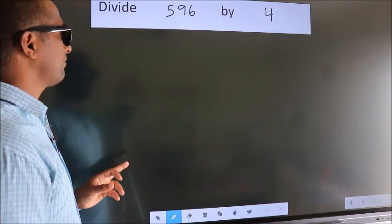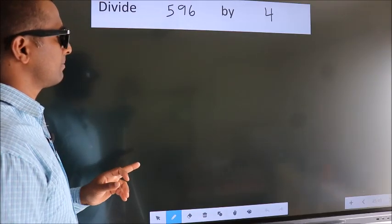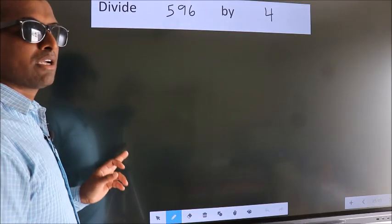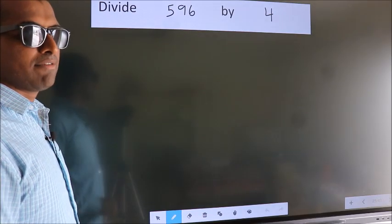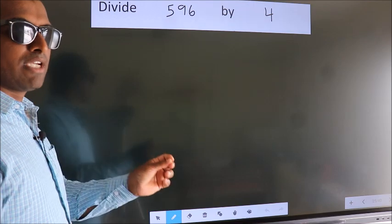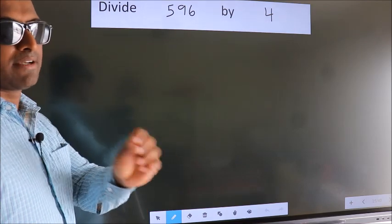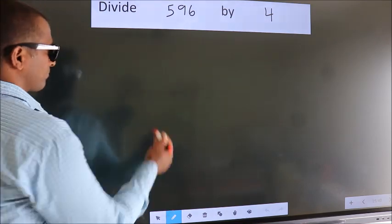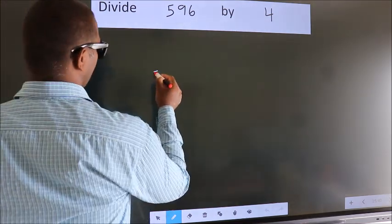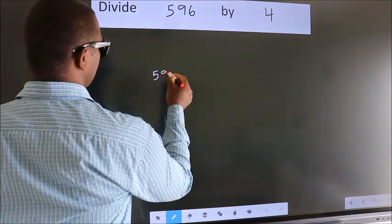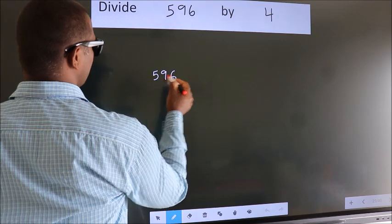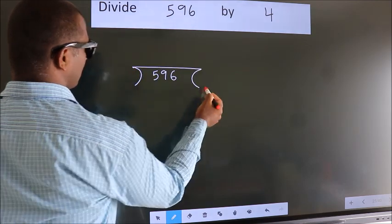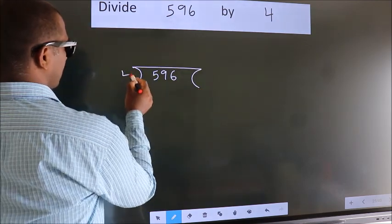Divide 596 by 4. To do this division, we should frame it in this way: 596 here, 4 here.